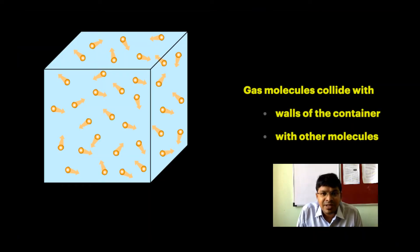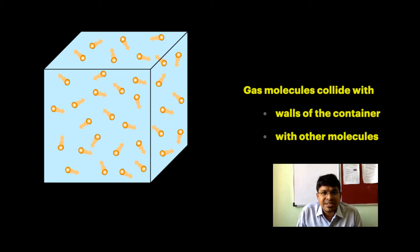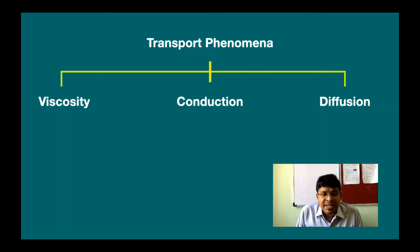Looking into transport phenomena: gas molecules in a container will collide with each other as well as the walls of the container. They move randomly inside the container, and these collisions are considered elastic in nature — that is, there is conservation of energy and momentum. These can be studied using three sub-phenomena: viscosity, conduction, and diffusion.